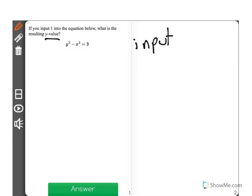Now remember, input is always your x. Your input is x, your output is y. So when it's asking for the resulting y value, it's actually looking for your output. And when it wants to know what your input is, or when it gives you your input,